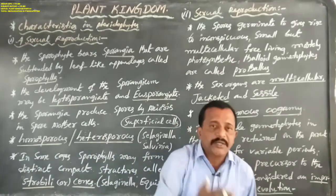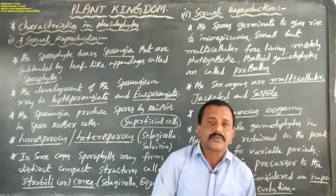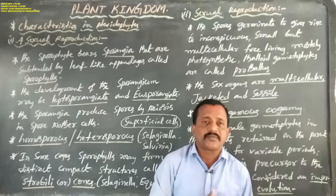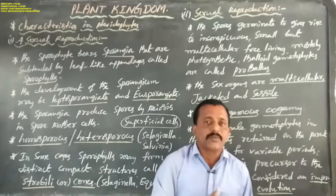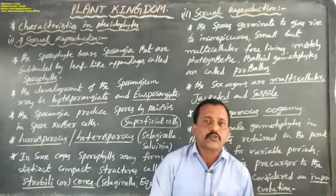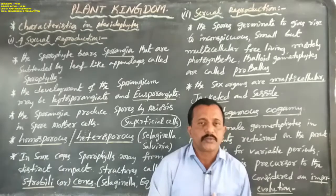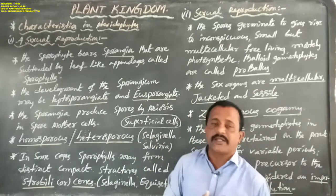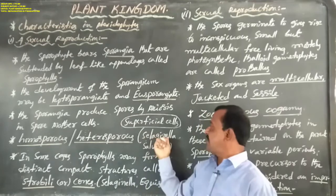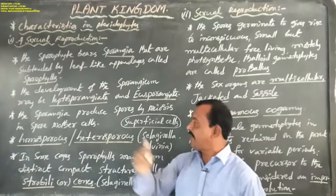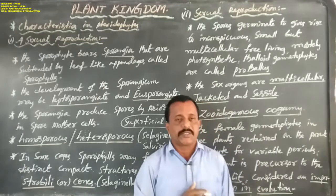In some pteridophytes, spores are different in size — some spores are larger in size (macrospores) and some are smaller in size (microspores). Microspores and macrospores appear in some species of pteridophytes, such as Selaginella and Salvinia. This phenomenon is named heterospory.